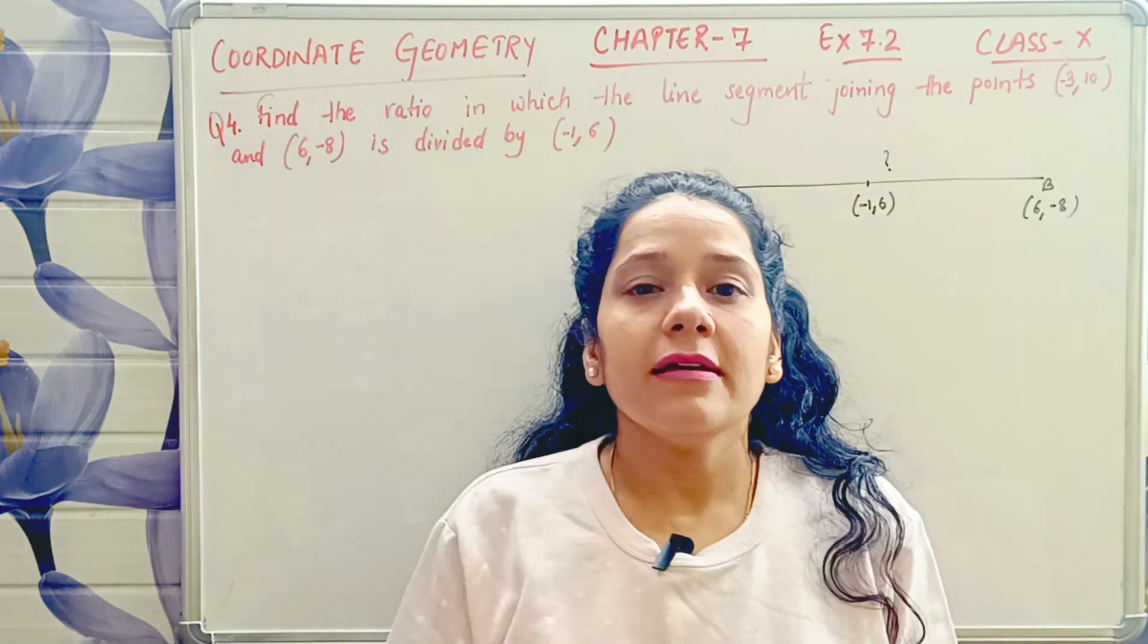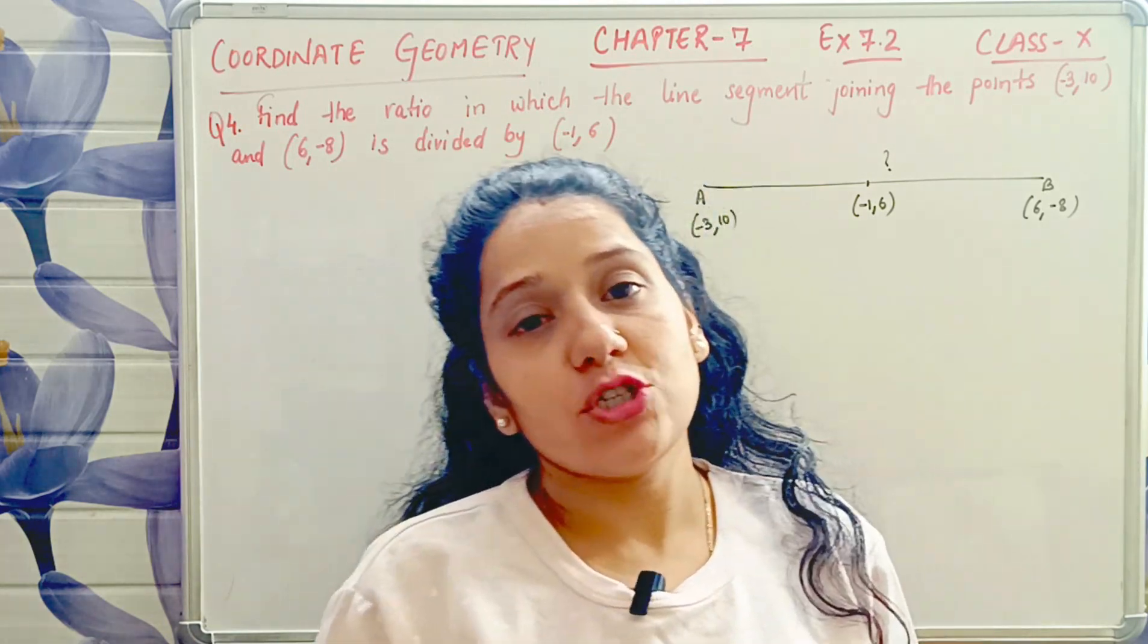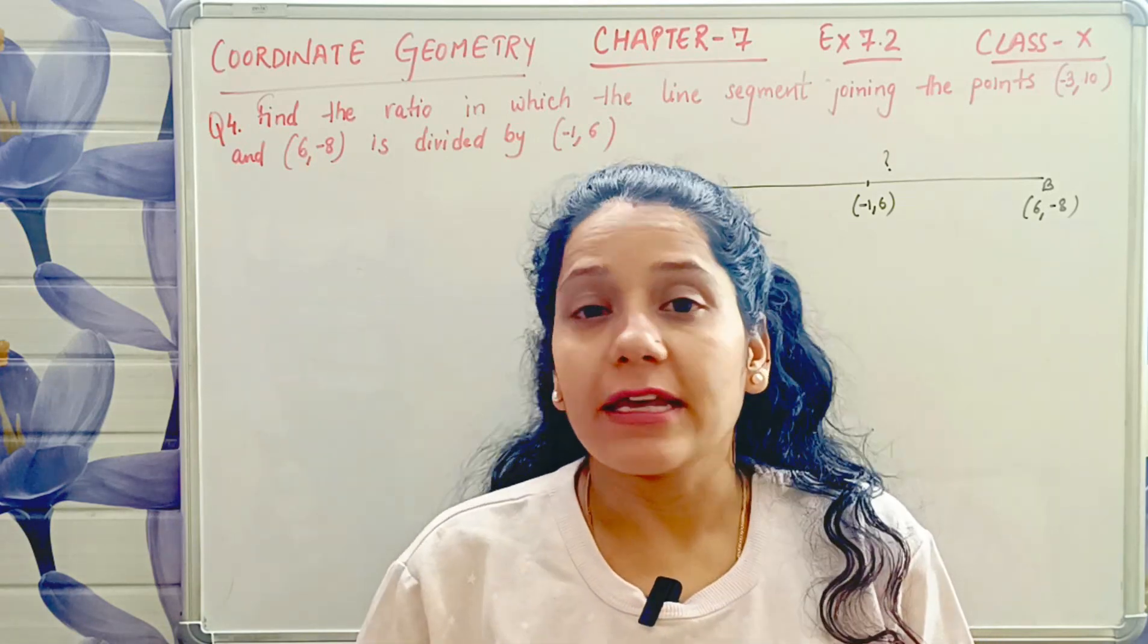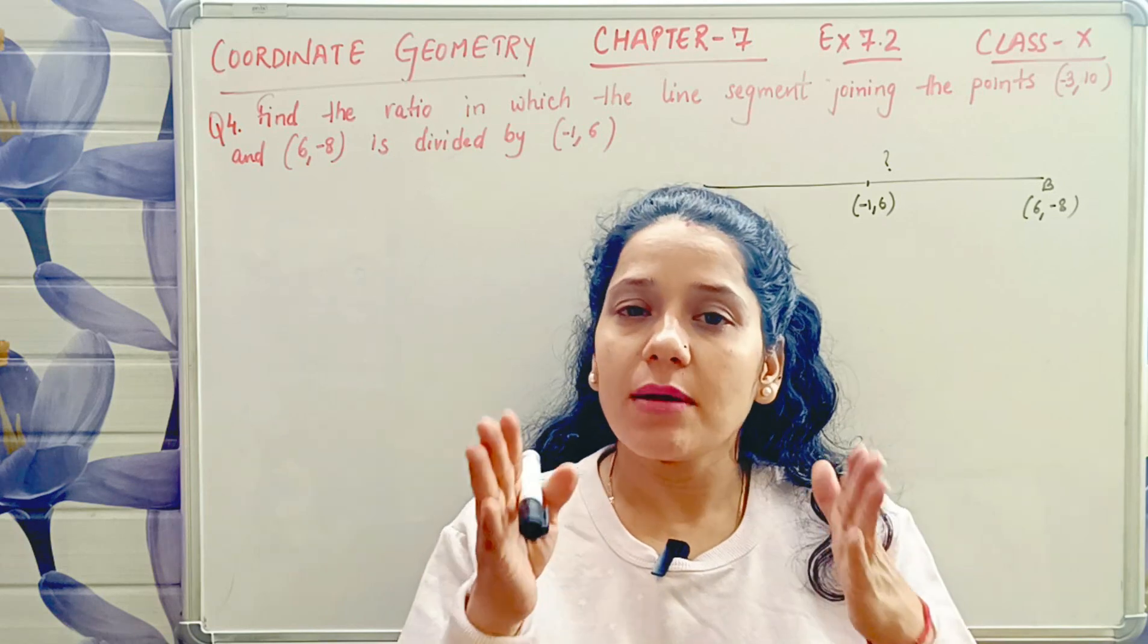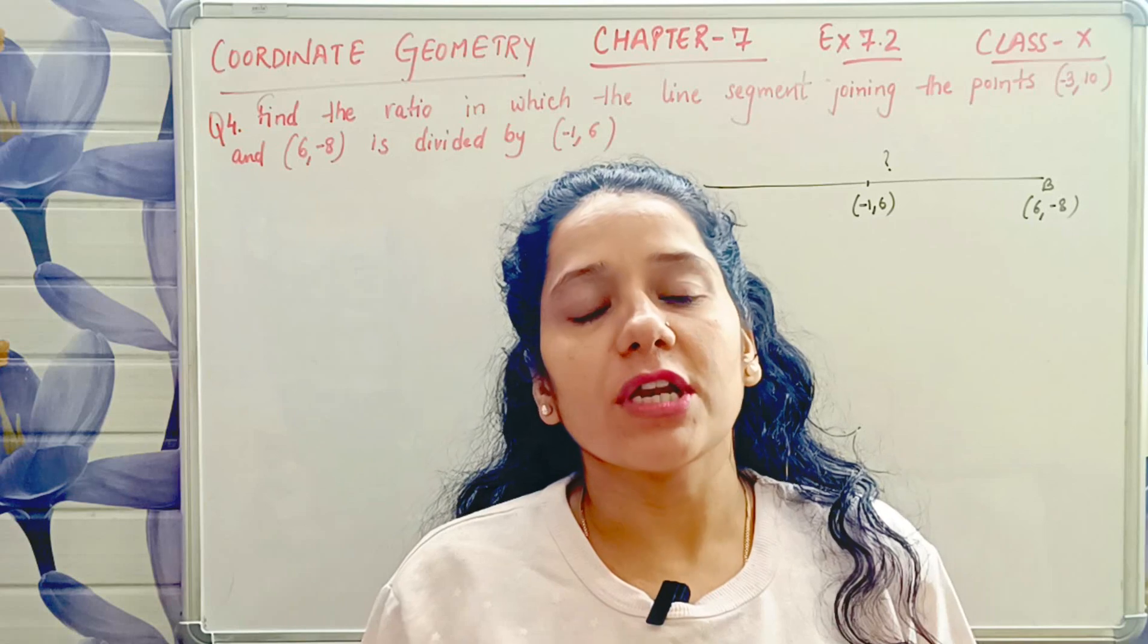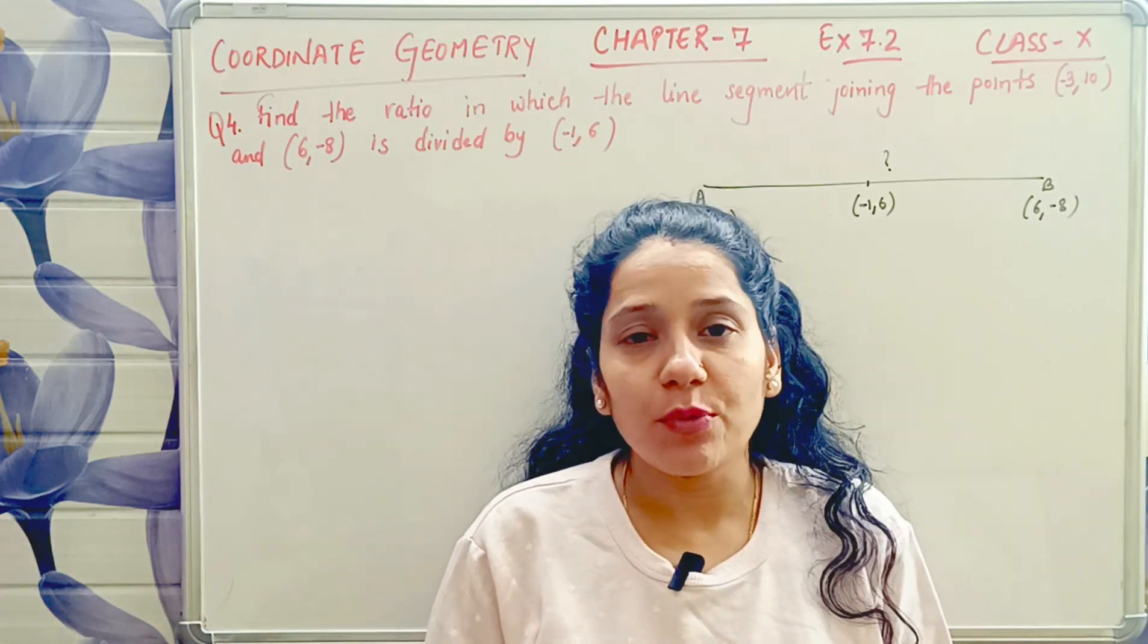So see how we do it. Now look, if there is a midpoint mentioned for the line segment joining, then we take 1 is to 1. But there is no mention here, so we will use the section formula. Whenever you find such a ratio which is not a trisection or midpoint.